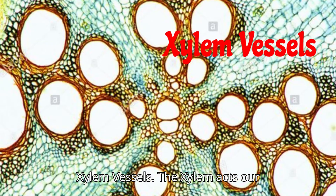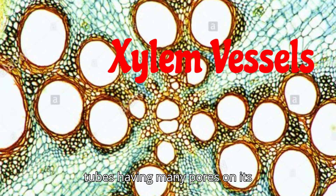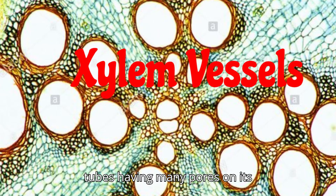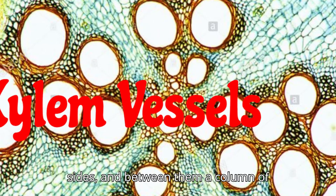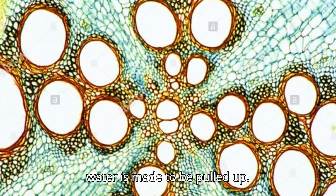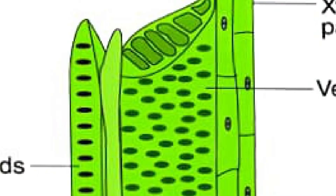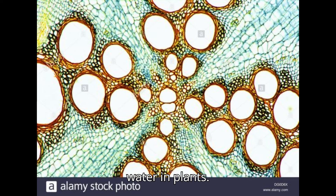The xylem acts as tubes having many pores on its sides, and between them a column of water is made to be pulled up. It is necessary for the transportation of water in plants.